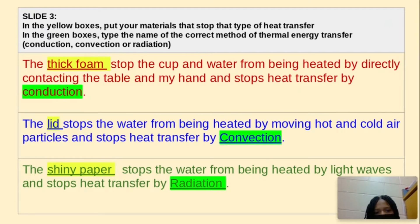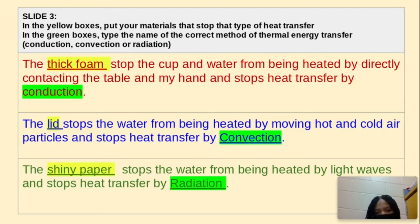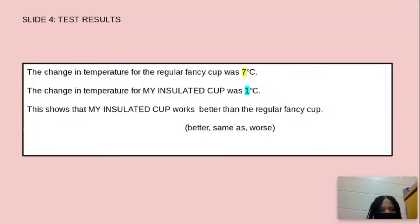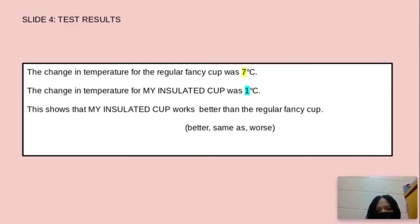The lid stops the water from being heated by moving hot and cold air particles and stops heat transfer by convection. The shiny paper stops the water from being heated by light waves and stops heat transfer by radiation. My test results: the change in temperature for the fancy cup was 7 degrees Celsius and the change for my cup was 1 degree Celsius. This shows that my cup works better than the fancy cup.